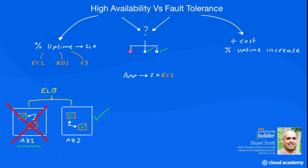With that in mind, we could argue that having two availability zones with two EC2 instances in each is fault tolerant at the AZ level, as operations would be maintained at the loss of an AZ and we'd still have the minimum number of instances still running. But should another failure occur then the SLA would be impacted.